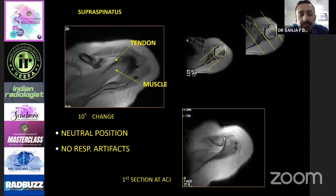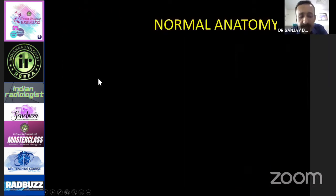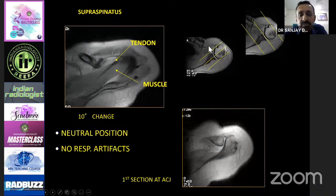The supraspinatus tendon is the most important one and has to be imaged very well. Technicians have to be really well trained to give good images of the shoulder. You have to understand that there is a supraspinatus muscle and a supraspinatus tendon — the myotendinous junction gives rise to the tendon, which inserts over the greater tuberosity. The angulation of oblique coronal images has to be parallel to this tendon, not the muscle, and not according to straight anatomical planes. It has to be parallel to the tendon and perpendicular to the tendon.